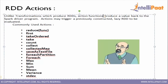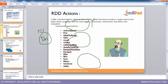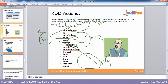An action actually returns the value back to the driver program. If you have a multi-node cluster, the driver program is executed from node 1 and the workers run on node 2, node 3, and node 4. Once you apply a transformation and then an action, that data is sent back to the driver code as a resultant data.